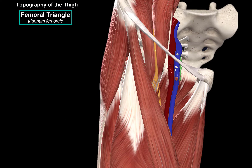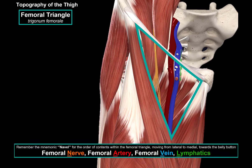The femoral triangle is a region in the anterior thigh — a triangular zone that will help you identify many structures within this part of the body. To help you remember the sequence of structures within the femoral triangle, I'd like to use the mnemonic NAVAL, which will help remember the order from lateral moving medially. The femoral nerve is the most lateral structure, followed by the femoral artery, femoral vein, and the lymphatics.